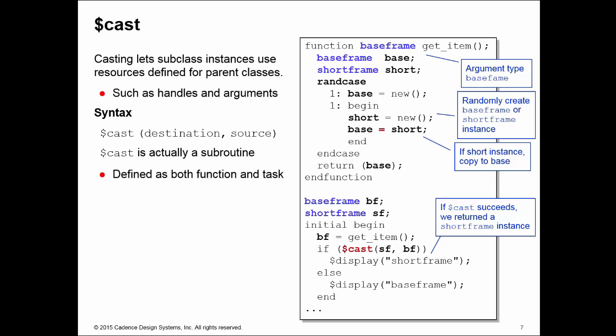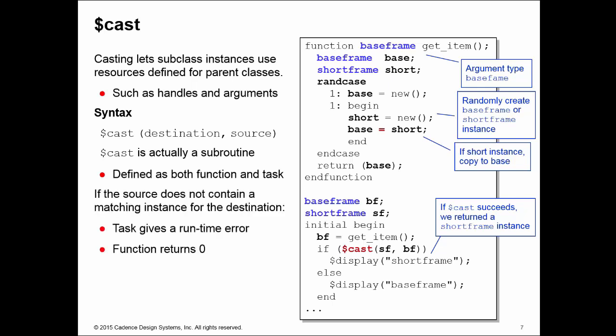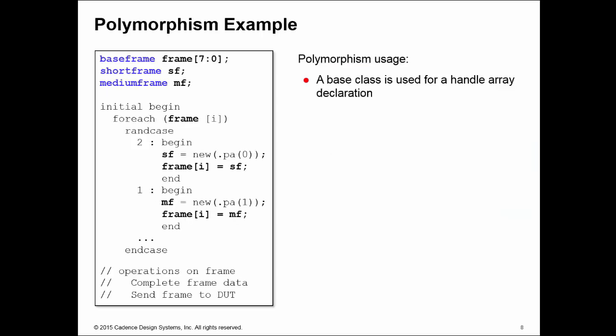Dollar cast comes in two forms: a function form and a task form. The previous slide showed the task form; this example uses the function form because we do something with the return value of the cast. Generally you should use the function form — if the cast fails as a function it returns zero, so you can handle that value. If the task form of the cast fails, it is a run-time error with no recovery.